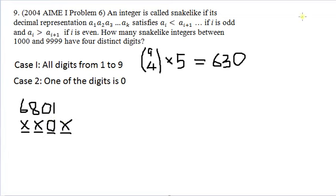So now we think of a similar bijection. We think of ways to have one of the digits 0, and we compare that on the other side with ways to choose three digits from 1 to 9.